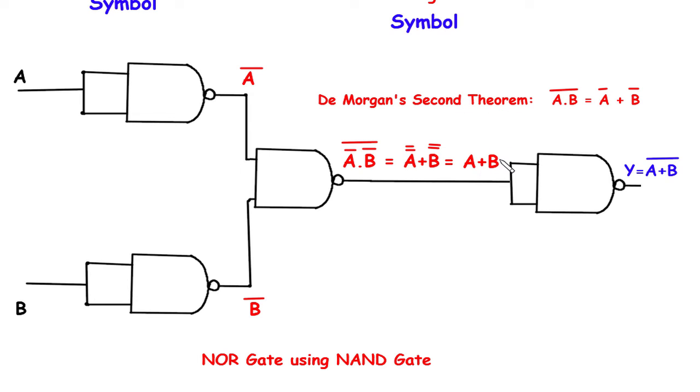Now again if we give this input to a NOT gate, then this will be A plus B whole bar.